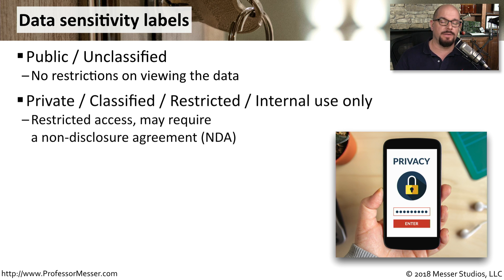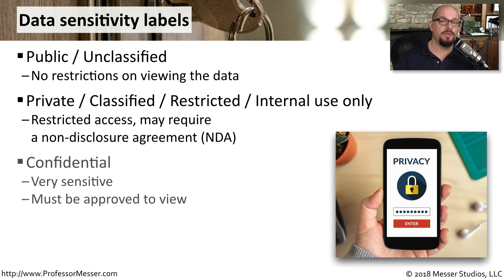Other types of labels may be a bit more restrictive, such as private or classified. You might have internal use only — this would be data with restricted access that you would only provide or allow someone else to see if they had a nondisclosure agreement in place. Or you might have confidential data, which would be very sensitive data that only certain people might be approved to be able to access.